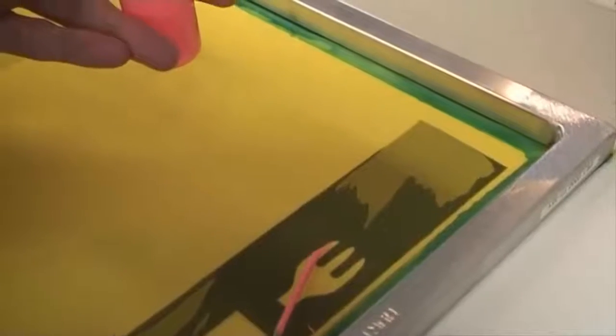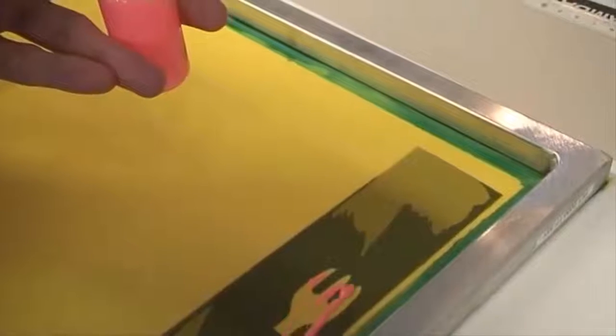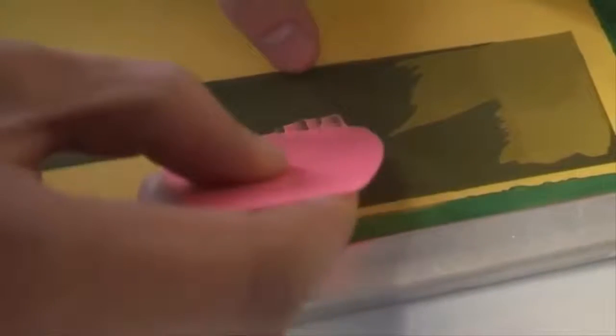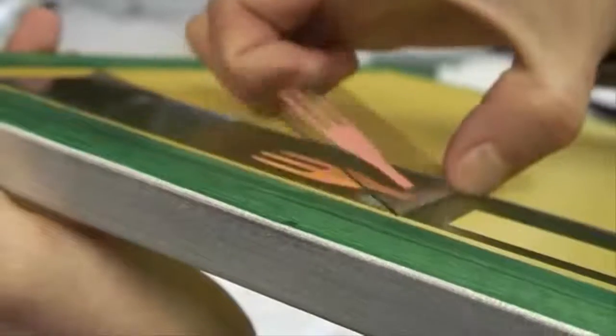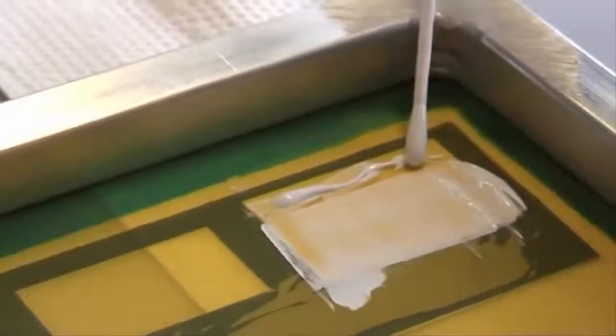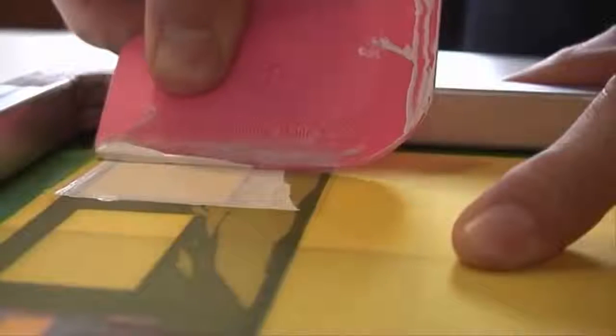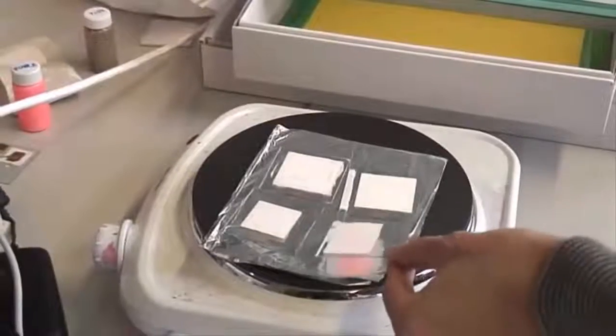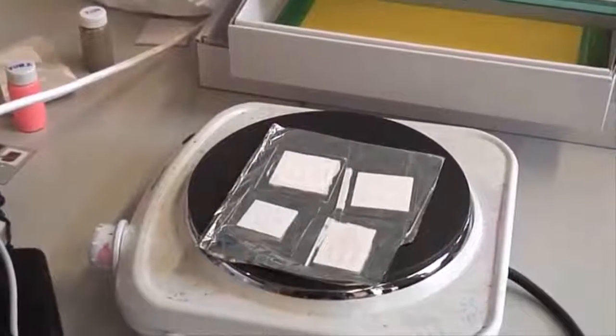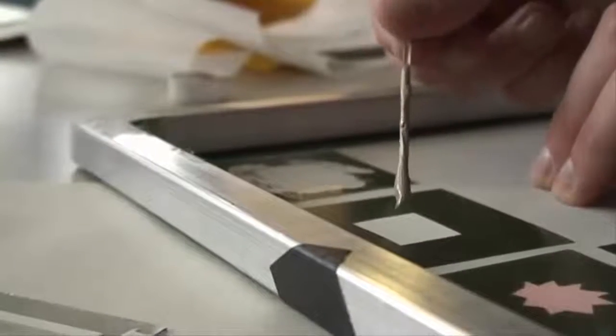Step 2: Apply thin layer of phosphor. Step 3 and 4: Apply two layers of dielectric insulator. Don't forget to dry your substrate in between each step. Step 5.